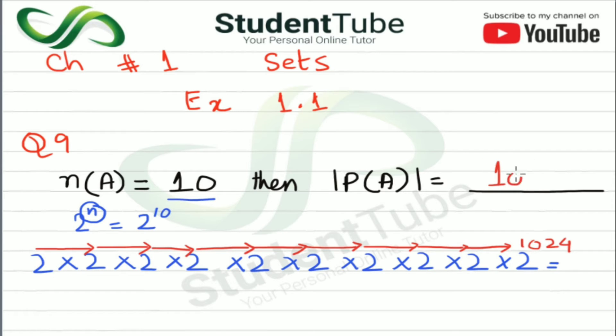1024, so our answer is 1024. If we have 10 elements in this set, how much will the total subset be? 1024.